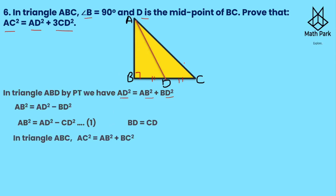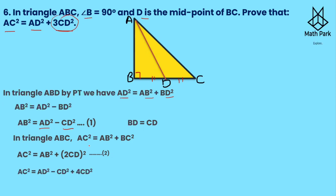Now in triangle ABC, AC is the hypotenuse, so AC² = AB² + BC². BC is twice CD, so we write BC as 2CD. Substituting equation one, AB² = AD² − CD², we get AC² = AD² − CD² + (2CD)² = AD² − CD² + 4CD² = AD² + 3CD². This is how we prove AC² = AD² + 3CD².